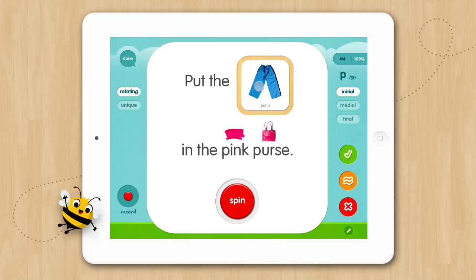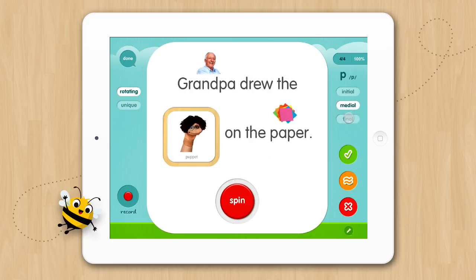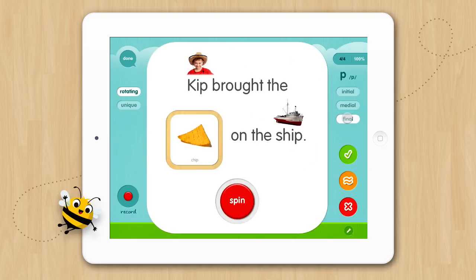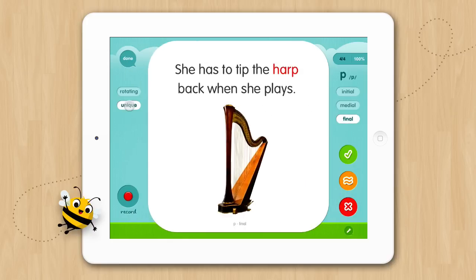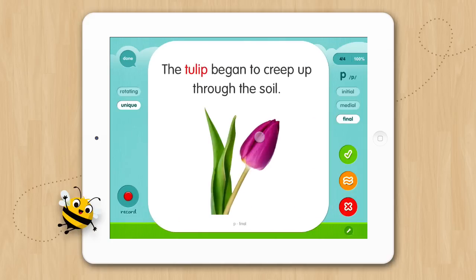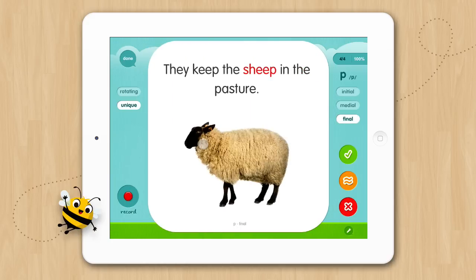If the child needs help with the sentence they can tap the sentence to have it read to them. You can quickly switch to the medial rotating sentence by tapping the medial button and the final rotating sentence by tapping the final button, or you can switch to the unique sentences by tapping the unique button on the left. Our unique sentences are also loaded with target words but are different every time. You can swipe through these just like the flashcards. You can tap on the card to hear voiced audio. Score these just as you would any other activity.